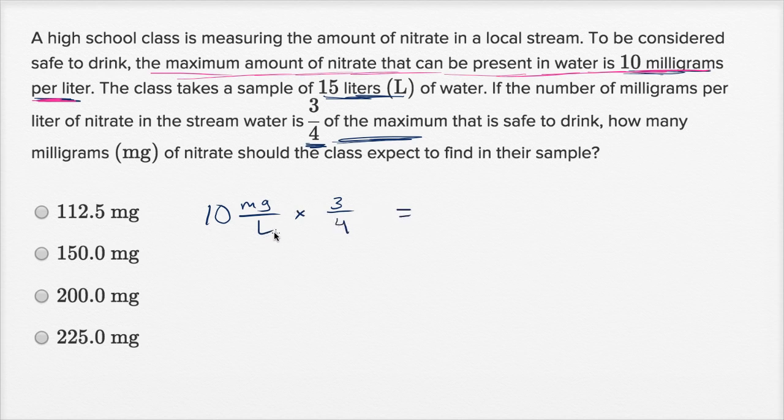That is seven and a half milligrams per liter. So that is 7.5 milligrams per liter. The way I think about this, three-fourths of 100 is 75, so three-fourths of 10 is going to be seven and a half.